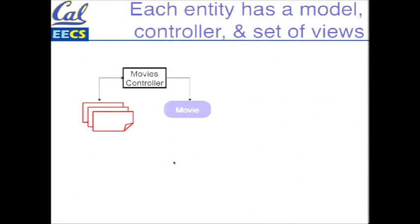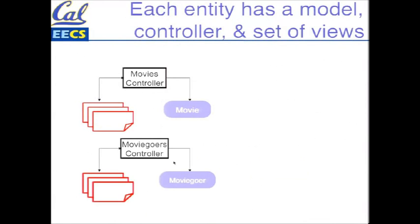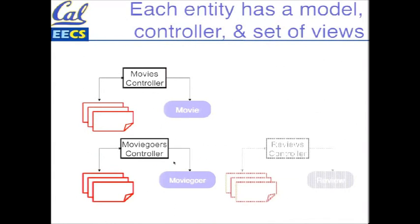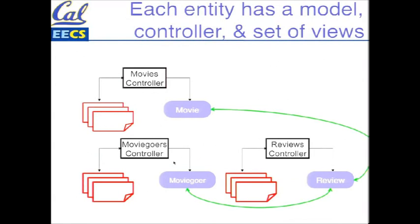We'll talk about alternatives in a moment, but let's start with the one we're actually using. In the Model View Controller pattern as implemented in Rails and many other apps, each entity or each type of thing the app manipulates has a model, a controller, and usually a set of associated views. For example, in the Rotten Potatoes example in the book, the most obvious type of model is a movie — movies have ratings, titles, and popularities. But we can also imagine adding moviegoers, and reviews, where a review doesn't make sense unless it's associated with the moviegoer who wrote it as well as the movie it's about. So there are multiple kinds of models, and there are ways to establish relationships among them.